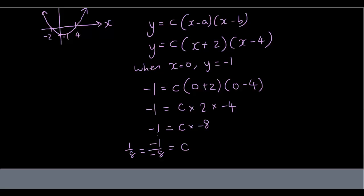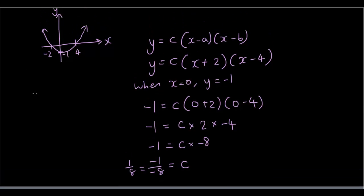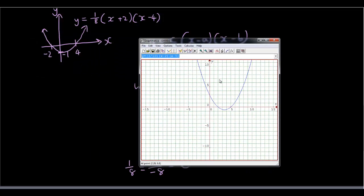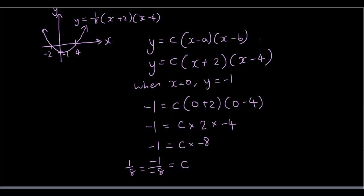So putting that into our final equation, we should have this line as y equals 1 over 8(x+2)(x-4). So let's try graphing this in graphmatica. I'm going to get rid of my other equation. So I'm going to type in y equals 1 over 8(x+2)(x-4). And it has indeed given me a parabola where it touches the x-axis at negative 2 and 4 and touches the y-axis at negative 1. So that's awesome.